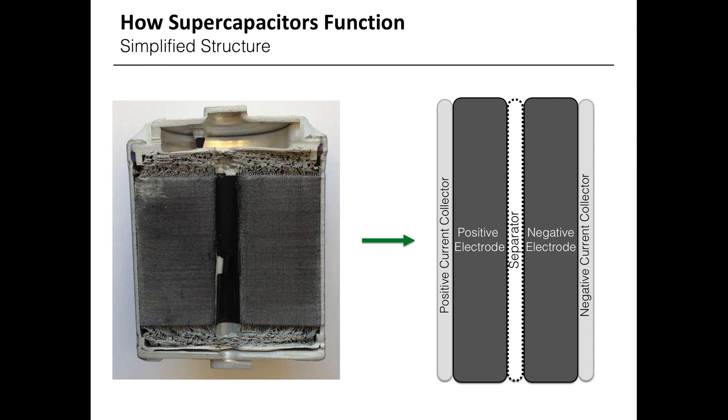The cell contains two identical carbon electrodes held apart by a paper-based separator, and the electrodes are both connected to aluminum current collectors.